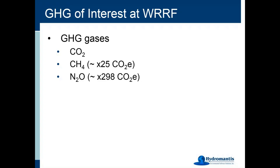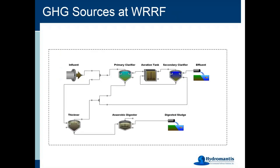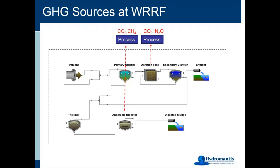Looking at the sources of greenhouse gases at water resource recovery facilities within our boundaries: we have biological reactors like aeration tanks, and anaerobic digesters where we recover methane through biological reactions. These can produce CO2 while mineralizing and treating organic matter, and nitrous oxide during nitrification and denitrification. In anaerobic digesters, the gases produced are carbon dioxide and methane, which can either go to the atmosphere or be used for energy recovery.